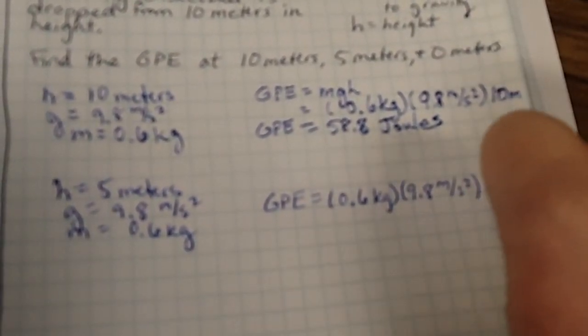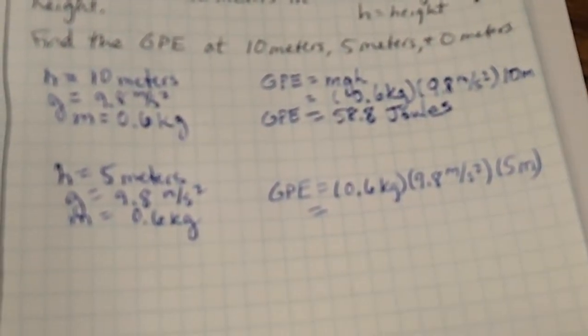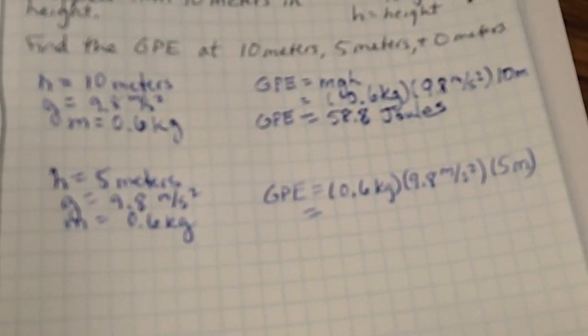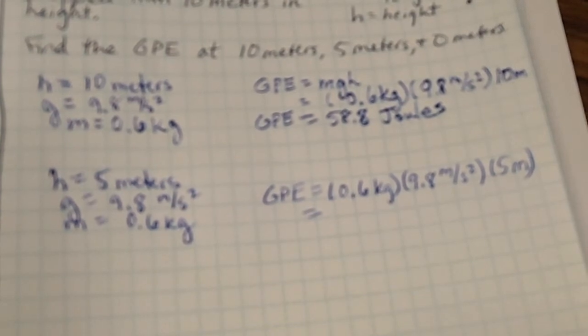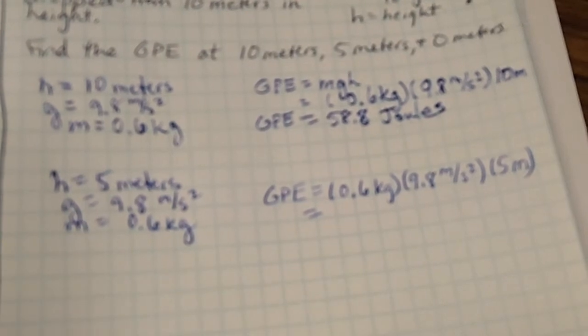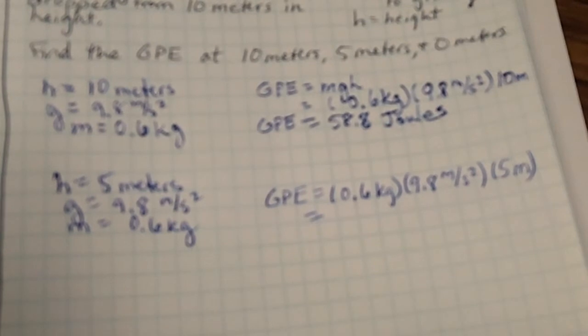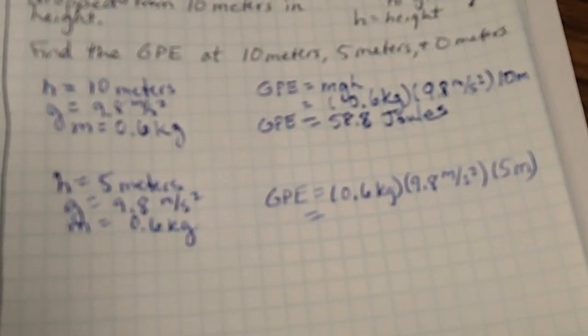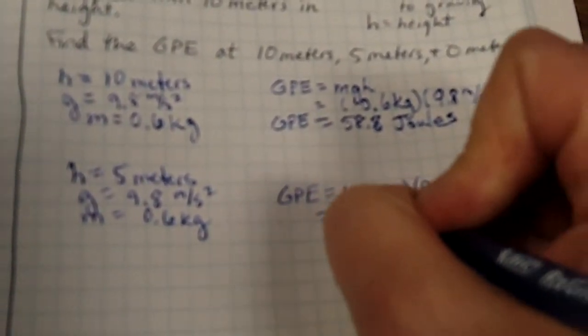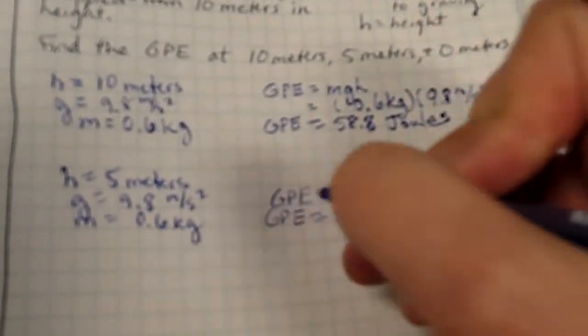And then our GPE we have M which is 0.6 kilograms times G 9.8 meters per second squared. And then 5 meters. So as you write that down I'm going to go ahead and calculate this. My guess is it's going to be half of what we looked at before. So I'm going to guess that it will be about 29.4. Let's take a look. So 9.8 times 5 times 0.6. 29.4. What do you know? 29.4 joules is the GPE halfway.